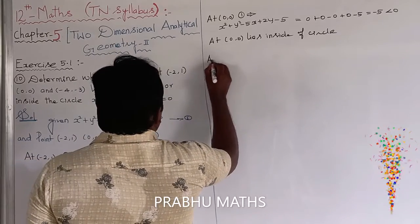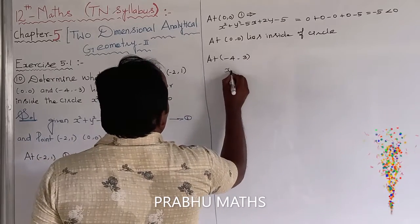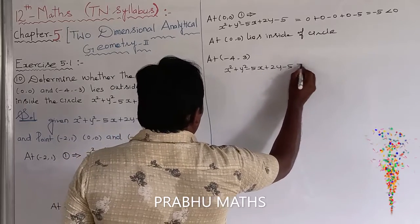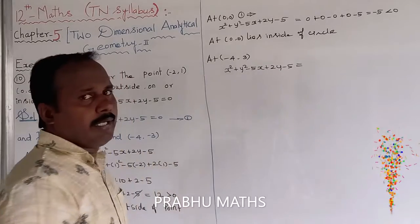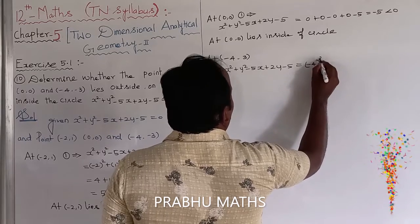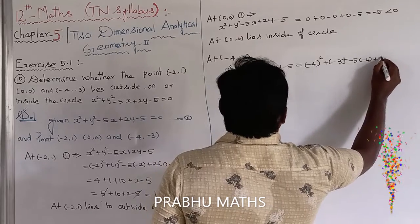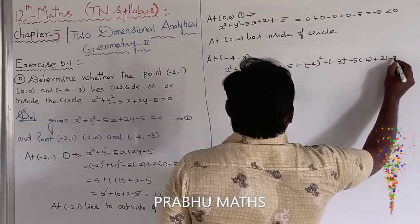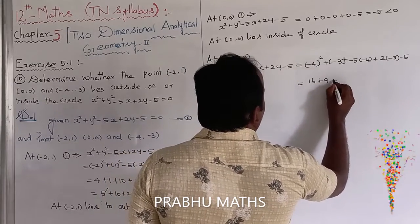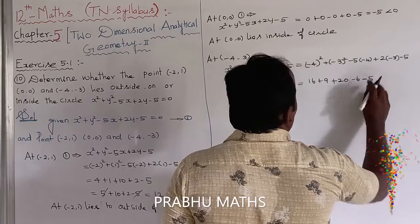Next, the last point is minus 4 comma minus 3. Substituting into the equation: (minus 4) squared plus (minus 3) squared minus 5 times (minus 4) plus 2 times (minus 3) minus 5, which equals 16 plus 9 plus 20 minus 6 minus 5.